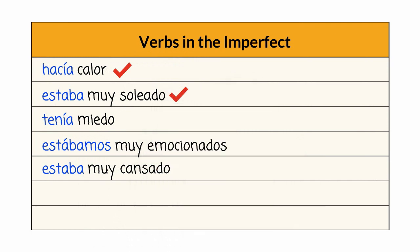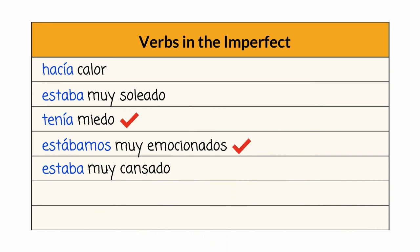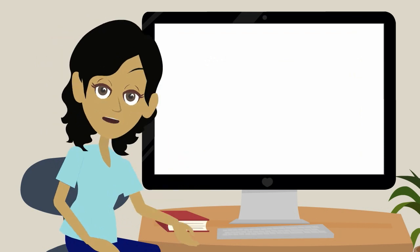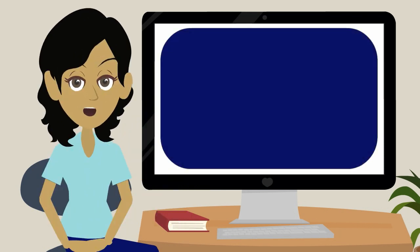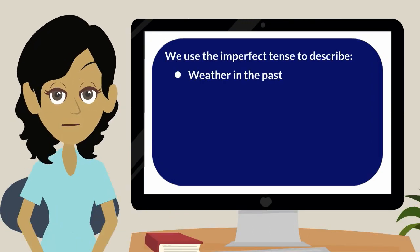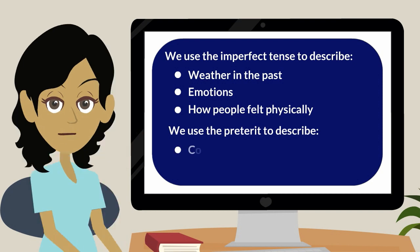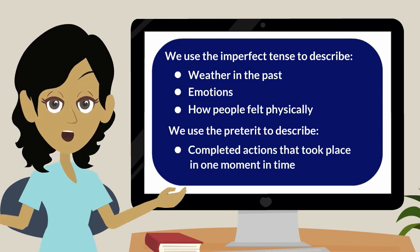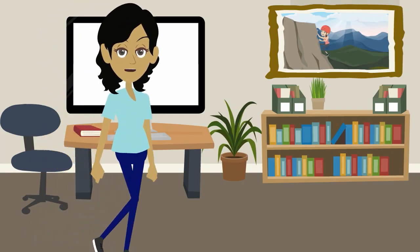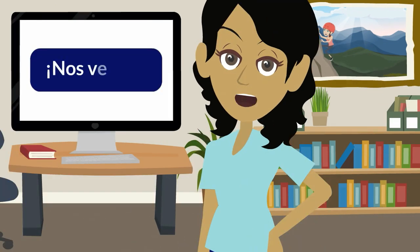These verbs in the imperfect are giving information about weather, while others give information about emotions, and others about how people feel physically. So, we use the imperfect tense to describe weather in the past, emotions, and how people felt physically. While we use the preterite to describe completed actions that took place in one moment in time. Great job today! Don't forget to go to your Explorer course for the Enfoque en la Forma video on this topic. ¡Nos vemos!